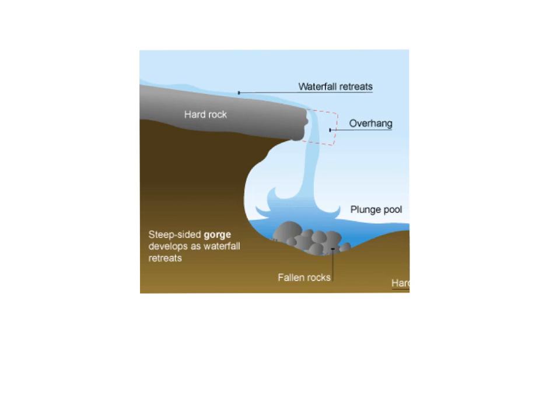The hydraulic action and abrasion mean the plunge pool is not only made deeper, but also cut back — this is undercutting the hard rock over the top, which isn't being eroded so quickly. That hard rock ends up as an overhang with nothing to support it, and so falls down into the plunge pool, creating more fallen rocks. So the cycle is repeated.